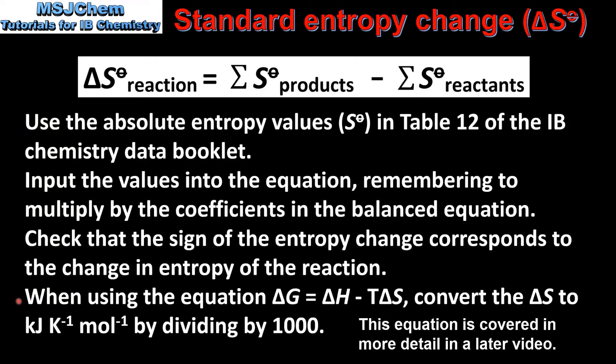And finally when using the equation delta G equals delta H minus T delta S, convert the change in entropy to kilojoules per Kelvin mole by dividing by 1000.